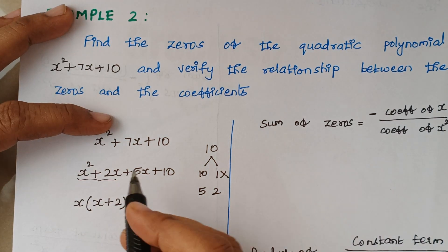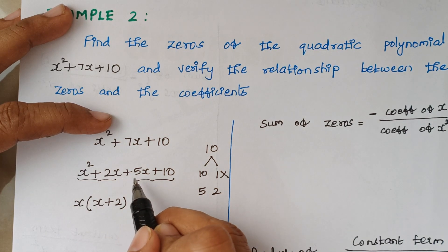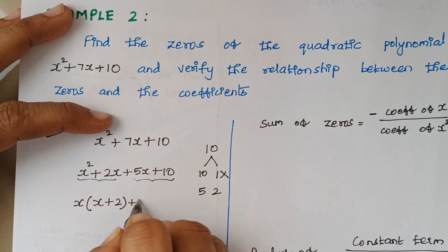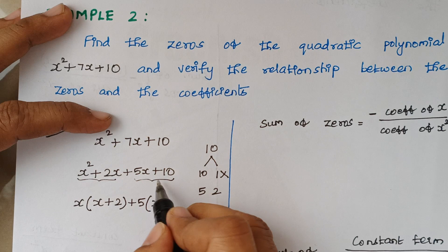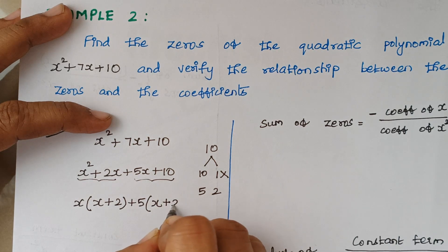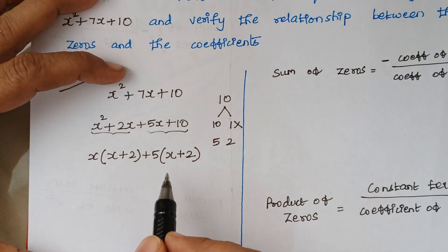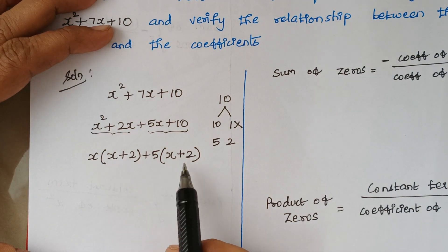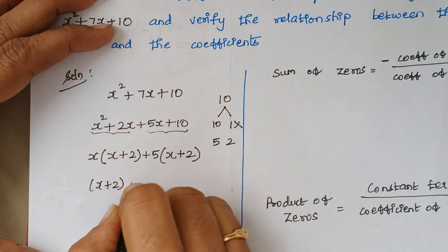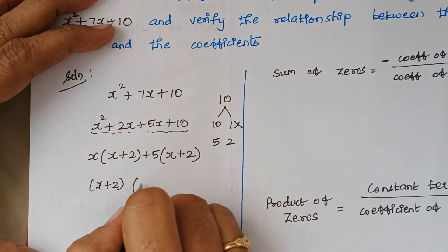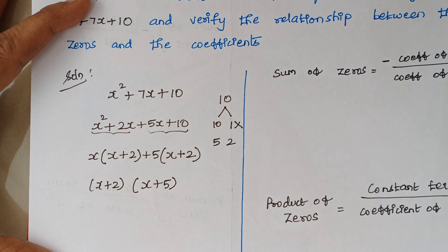Now, when you consider the next two terms, you can take 5 out commonly. When you take 5 outside, the remaining terms will be x + 2. In this case, we are having (x + 2) as a common factor. When you take out (x + 2), the remaining terms will be (x + 5). So, (x + 2)(x + 5) are the respective factors.